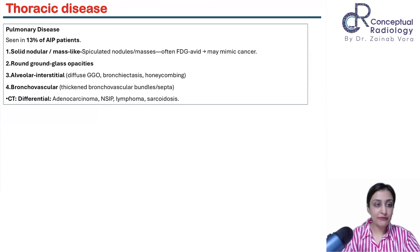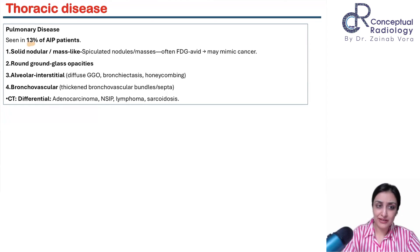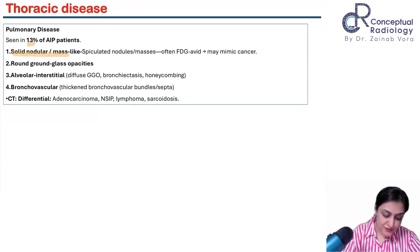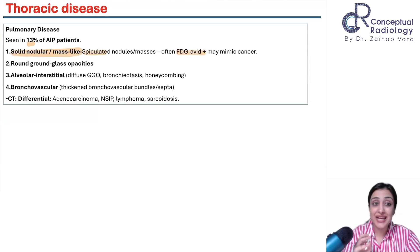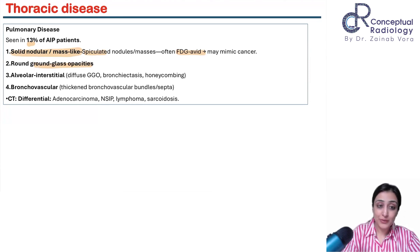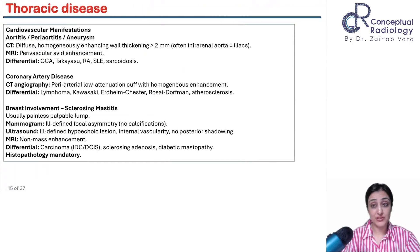Lungs are affected in 13% of cases — not very common. Four patterns: solid nodules mimicking cancer (FDG-avid with spiculated margins), ground-glass opacities, interstitial thickening, and bronchovascular thickening.